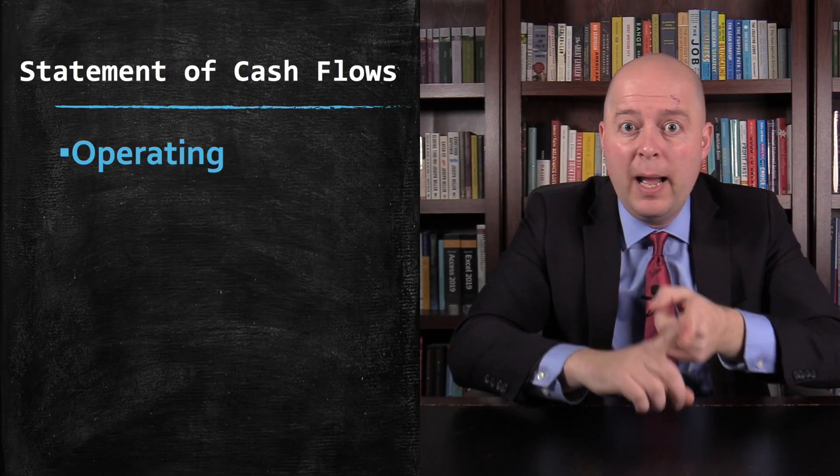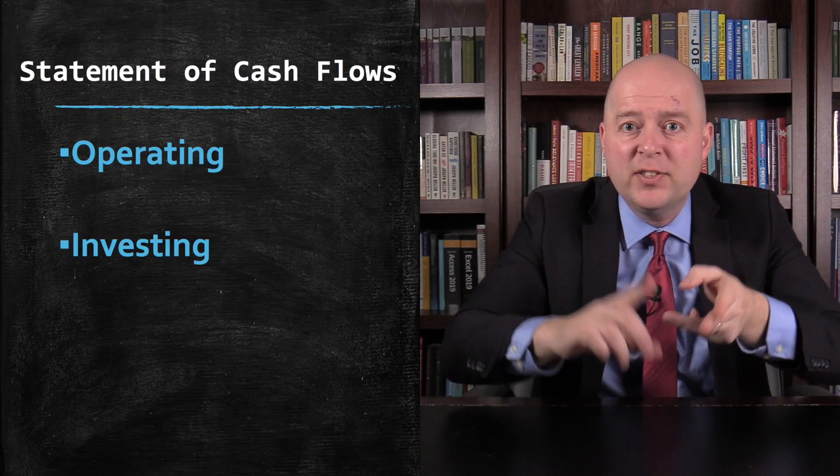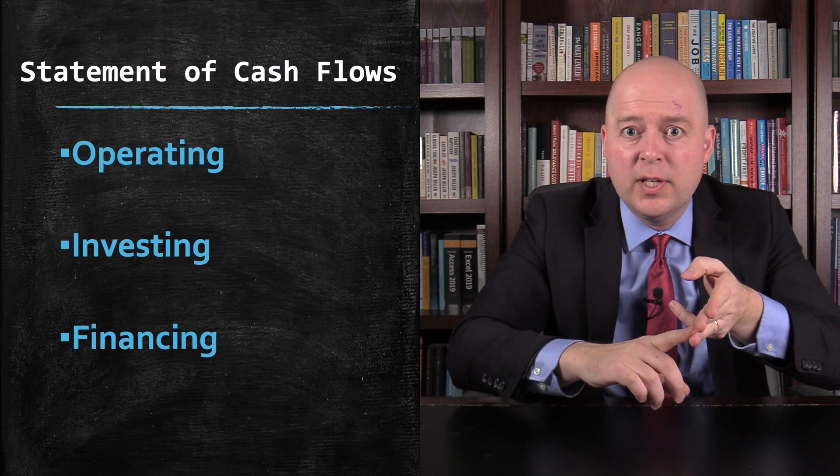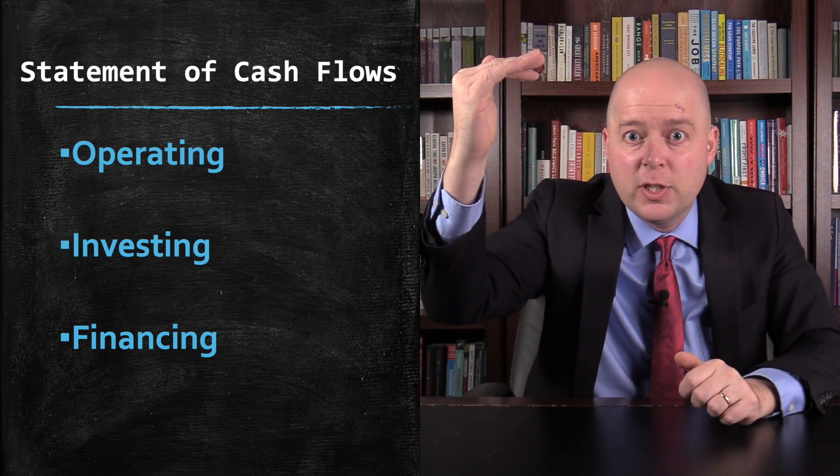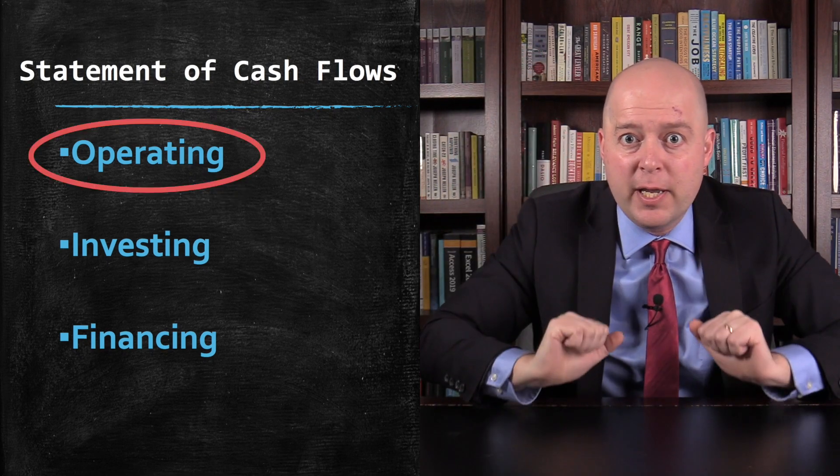There are three sections of the statement of cash flows: operating, investing, and financing. But the information you want is in the top section — operating activities.